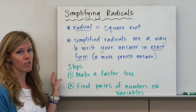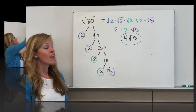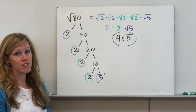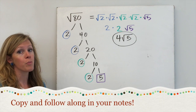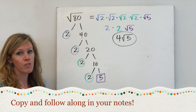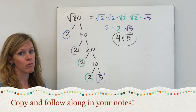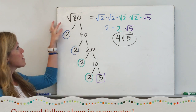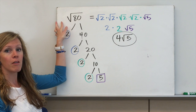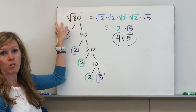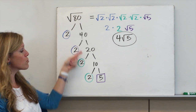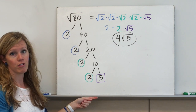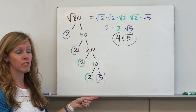Write this down in your notes. Here's our first example that I've already worked out for you, so put this in your notes and follow along as I go through it. Let's say we want to simplify radical 80, or the square root of 80. First, we're going to make a factor tree of all the factors of 80.